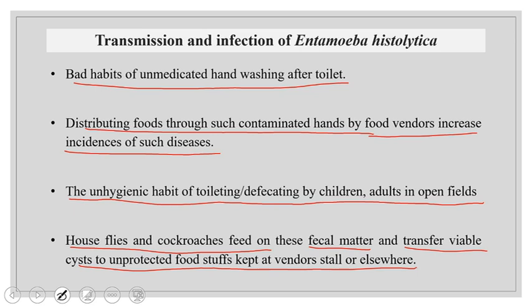The transfer of this infection is by the fecal-to-oral route — fecal meaning stool, and oral meaning the mouth. By any means, if the cysts move from the feces to the mouth — whether through uncovered food, unwashed hands, or water carrying cysts from open fields — that causes the transmission of Entamoeba histolytica.